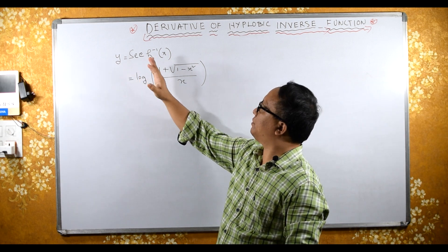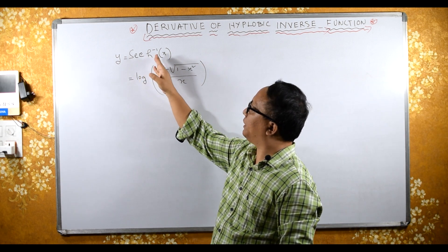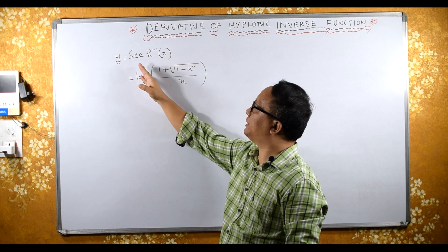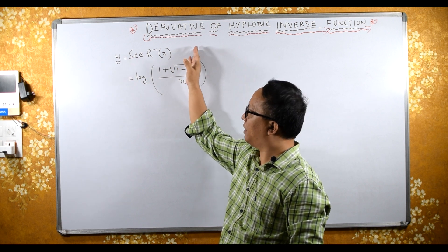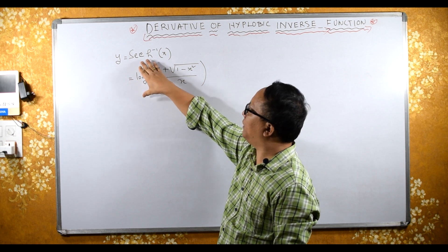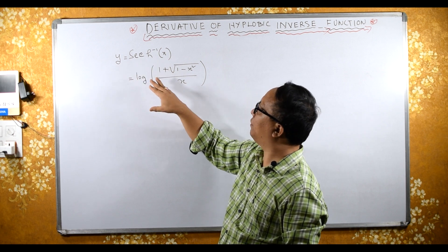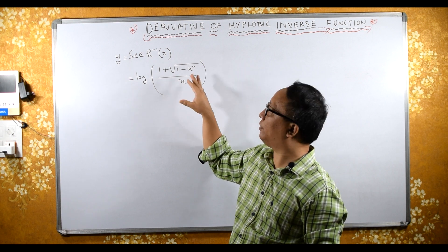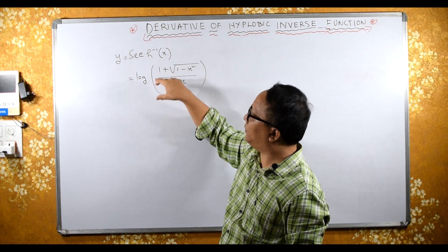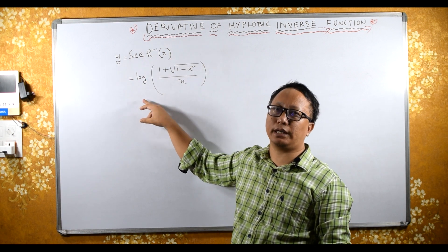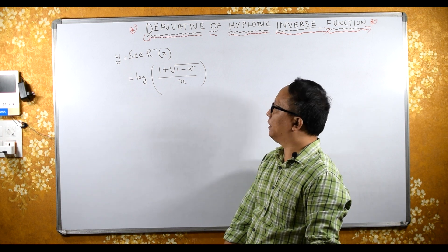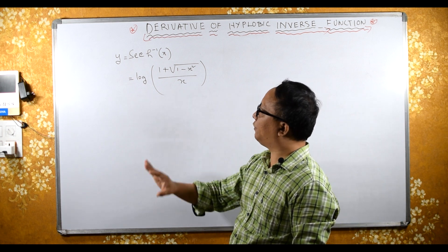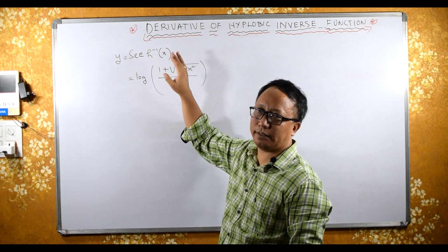It is given that y equals sech⁻¹(x). We need to find the derivative of sech⁻¹(x). We know that sech⁻¹(x) equals log of (1 plus square root of 1 minus x²) upon x. For the proof of this formula, you can check one of my videos. Our aim is to find the differentiation of sech⁻¹(x).